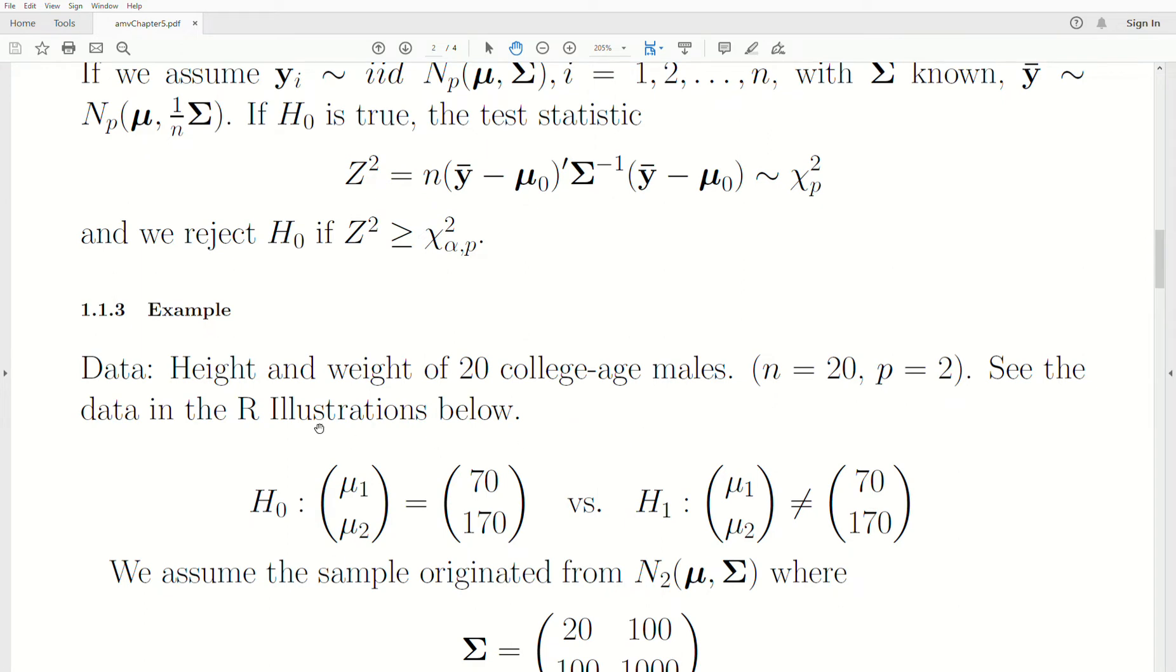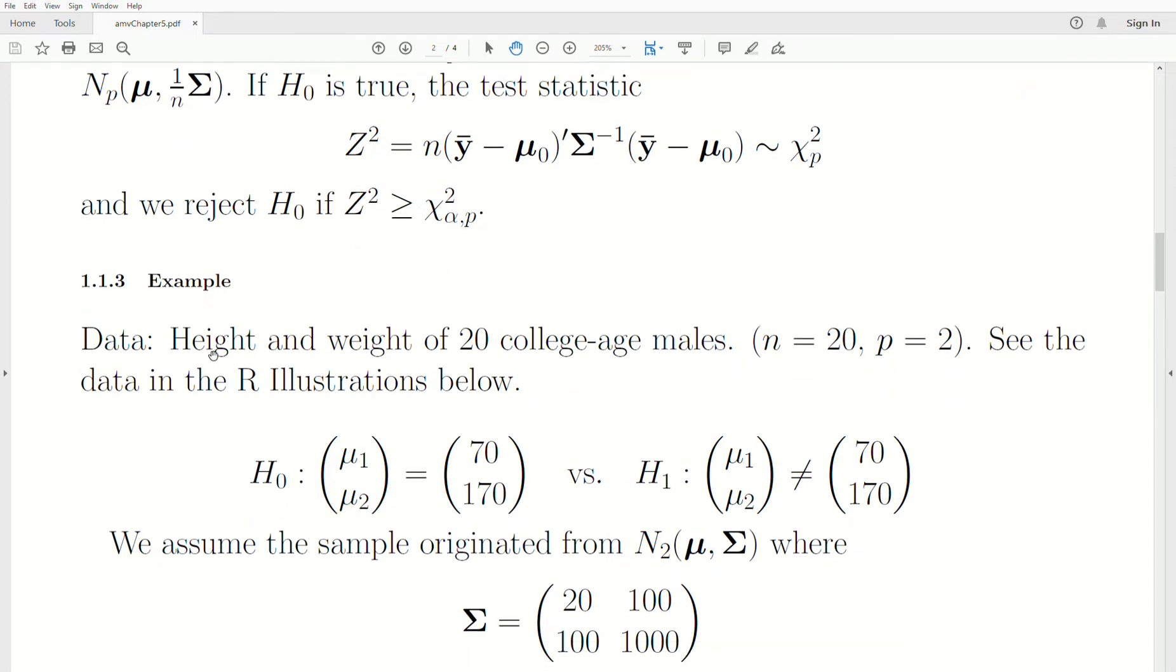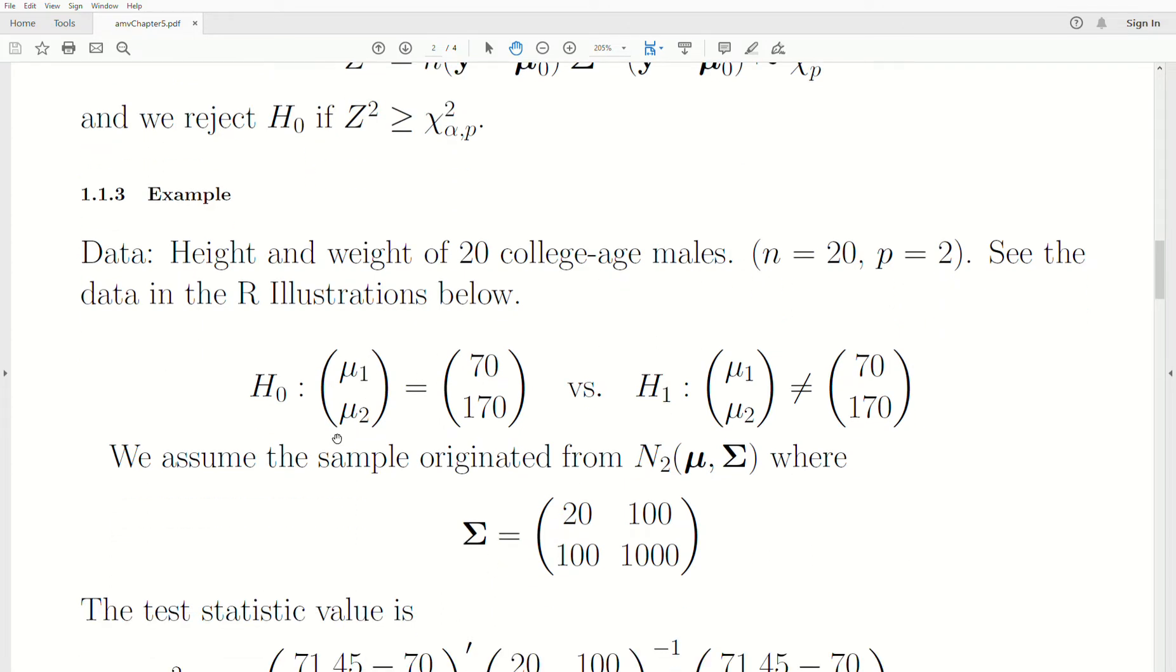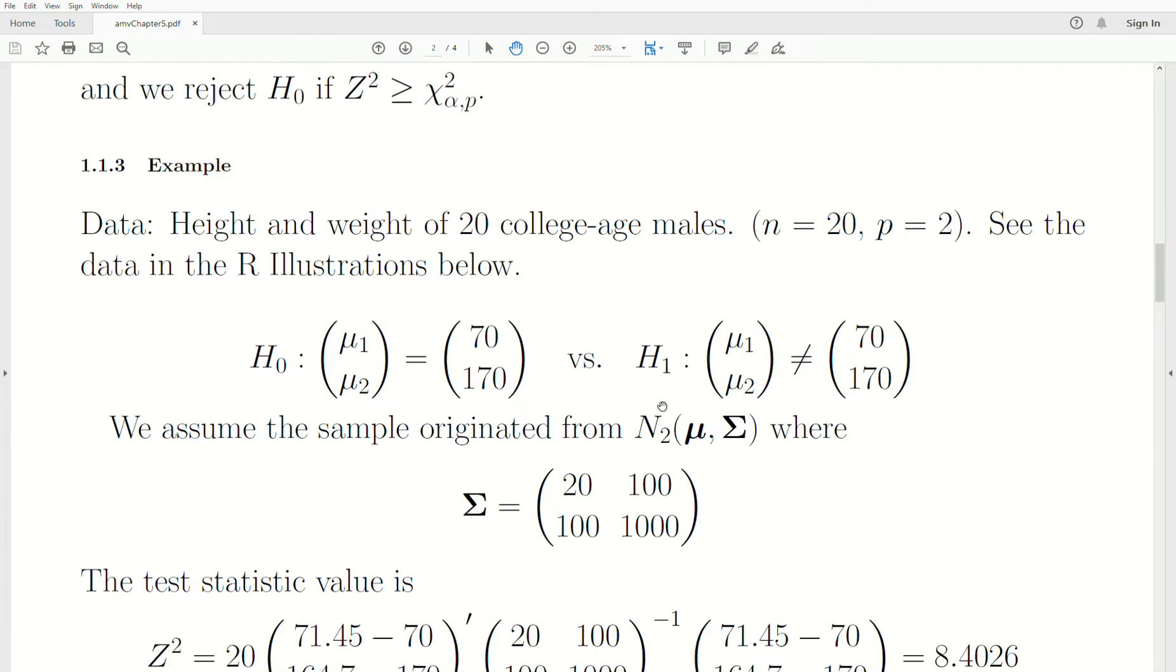So here's an example. Let's say we collect the height and weight of 20 college-age males. So that means n equals 20, and p is 2. So each subject, we have two variables, two pieces of information. And I'm going to say, see the data in our illustrations below. So we'll create a plot, and I'll show you the values. And the null hypothesis is that the mean vector is 70 and 170 versus the alternative that it's not 70 and 170.